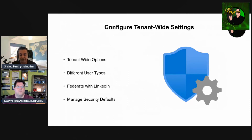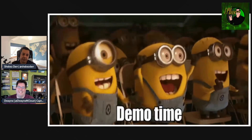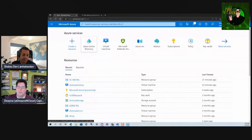Finally, let's touch on managing security defaults. With so many attack types — password sprays, replay attacks, phishing — security defaults make protecting your organization easier. They do this in several ways: requiring MFA, blocking legacy authentication protocols like POP3 and IMAP, and protecting privileged activities like access to the Azure portal. Don't give everyone access to that. We'll talk about PIM later on as well.